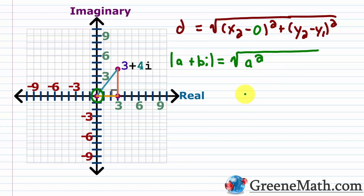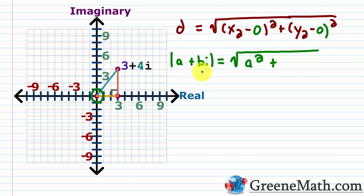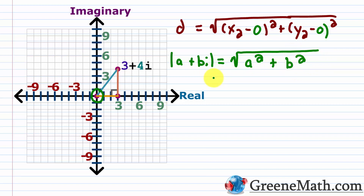For the imaginary values — the y sub 2 minus y sub 1 part — I don't have y values anymore, I have imaginary values. Because one of those imaginary values is 0 (the origin), I have b minus 0, squared, which simplifies to just b squared. So it's very easy to find the absolute value of a complex number: the absolute value of a plus bi is just going to be the square root of a squared plus b squared.